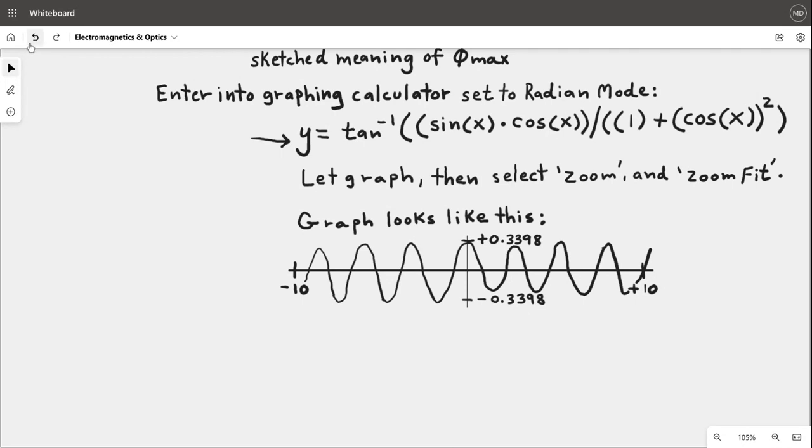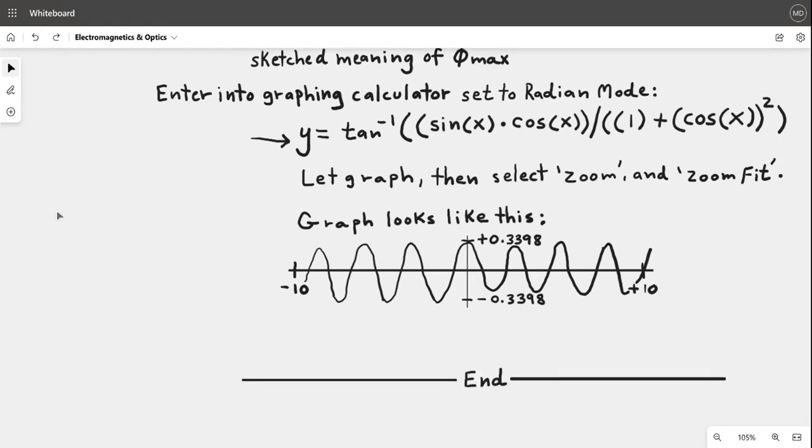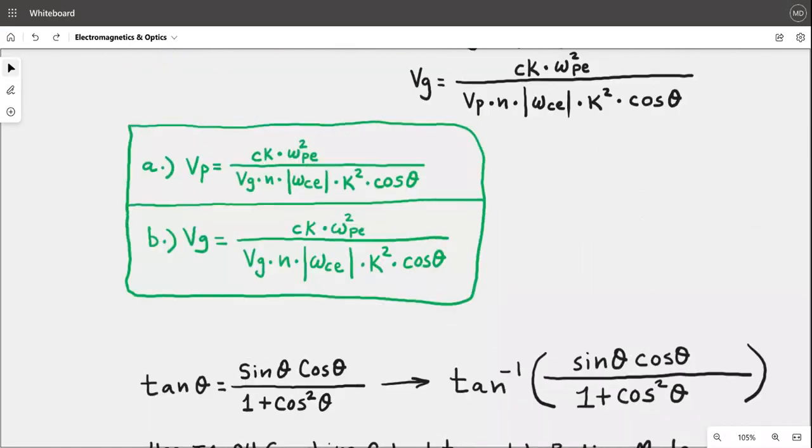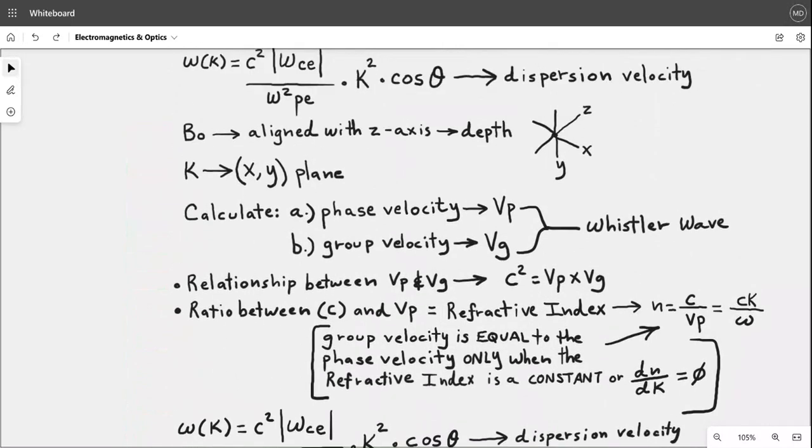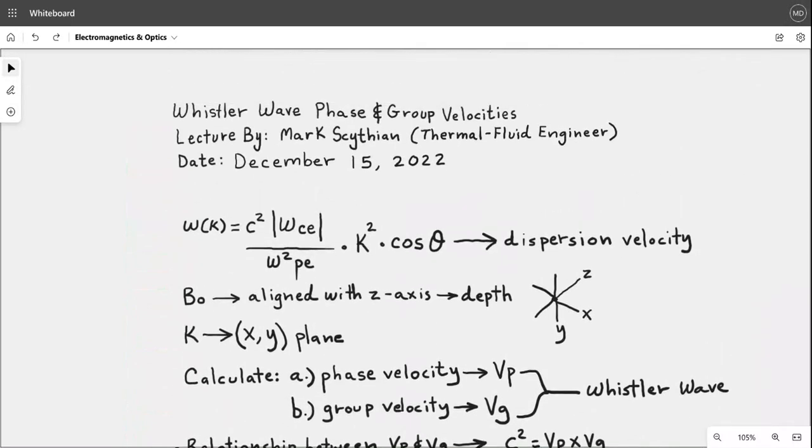That is the recommendation to solve this problem or problem set in the Whistler wave function. That concludes this lecture. As a reminder of the problem set, you'll have something like this. This is probably familiar to problems found in most textbooks, the dispersion velocity. This is pertinent to the Whistler wave phase and group velocities. Thank you for watching this lecture and have a great day.